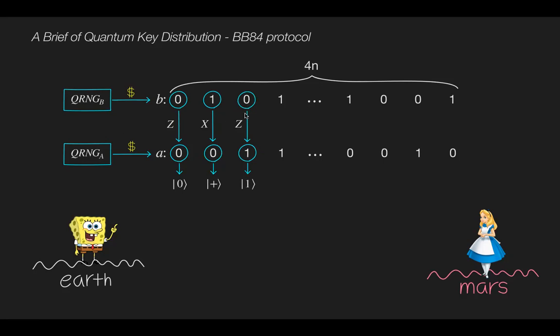Similarly, Bob chooses z basis if 1 in the string a is encoded in qubit 1. Also, if random bit in the string b is 1, he chooses the x basis for encoding. Then 1 in the string a is encoded in a qubit minus. In a similar manner, Bob creates the full n number of qubits.